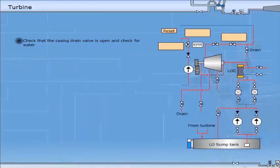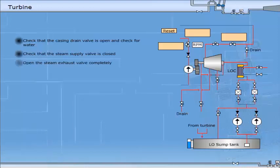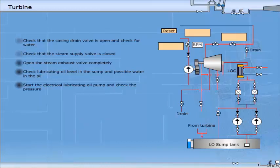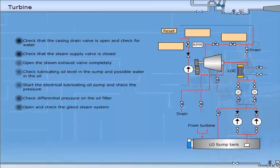Check that the casing drain valve is open and check for water. Check that the steam supply valve is closed. Open the steam exhaust valve completely. Check lubricating oil level in the sump and possible water in the oil. Start the electrical lubricating oil pump and check the pressure. Check differential pressure on the oil filter.